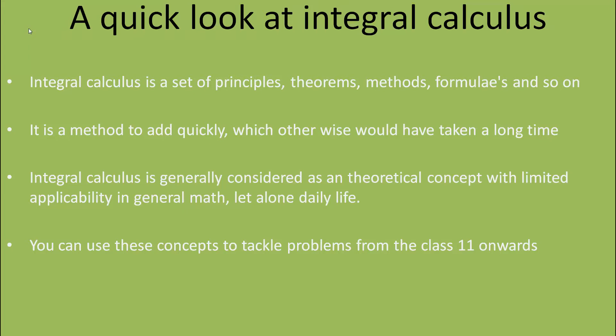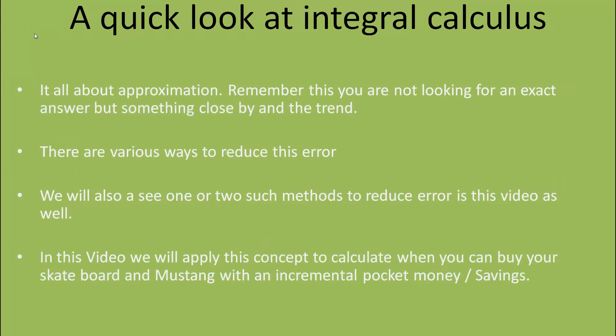You can use these concepts to tackle problems from class 11 onwards. Keep in mind that there is a lot of approximation involved in these methods. In general, with these methods you are not really looking for an exact answer, but something close by and more importantly the trend. There are various ways to reduce this error, and we will see a couple of homemade methods. In this video, we will apply these concepts to calculate when you can buy your skateboard and perhaps a Mustang with incremental pocket money or savings.